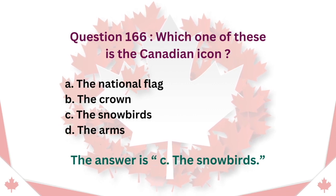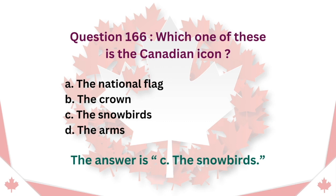Question 166: Which one of these is a Canadian icon? A. The national flag. B. The crown. C. The Snowbirds. D. The arms. The answer is C. The Snowbirds.